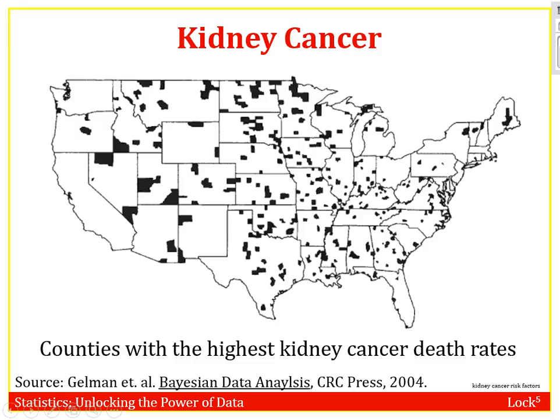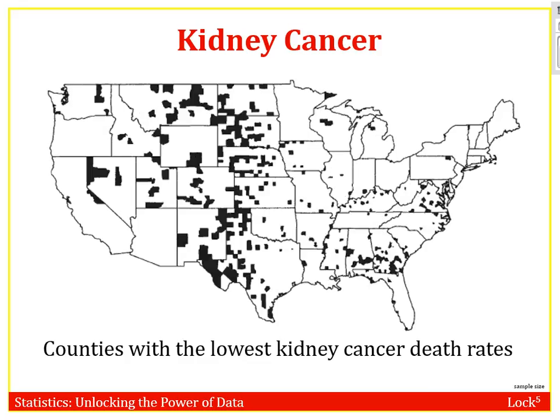So take a look at this one. See if you can think about what some of the risk factors are for kidney cancer. See if you can hypothesize what's going on and why these counties have the highest cancer rates, and also why these have the lowest. Pause the video and go ahead and try to figure that out.